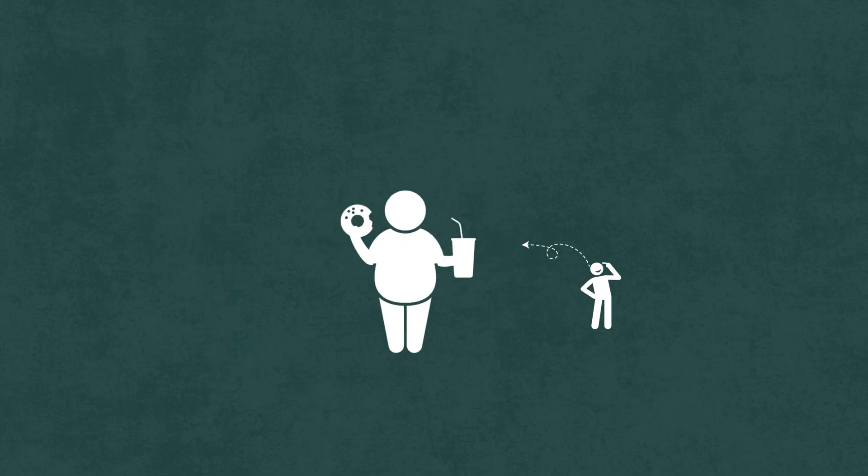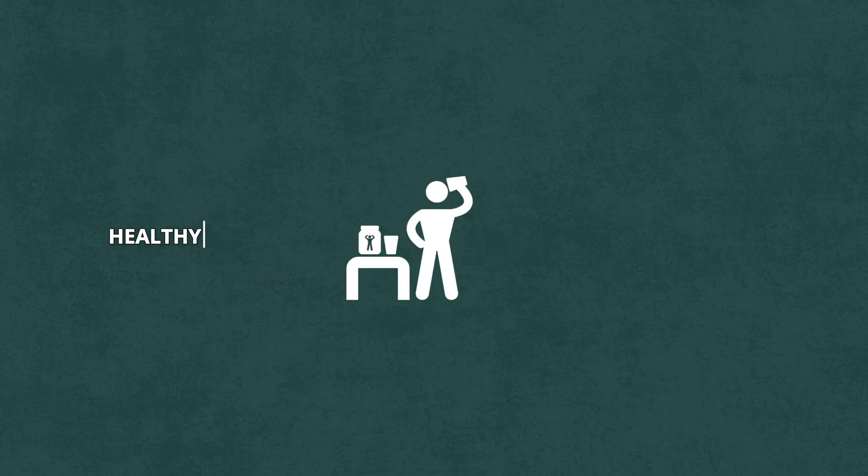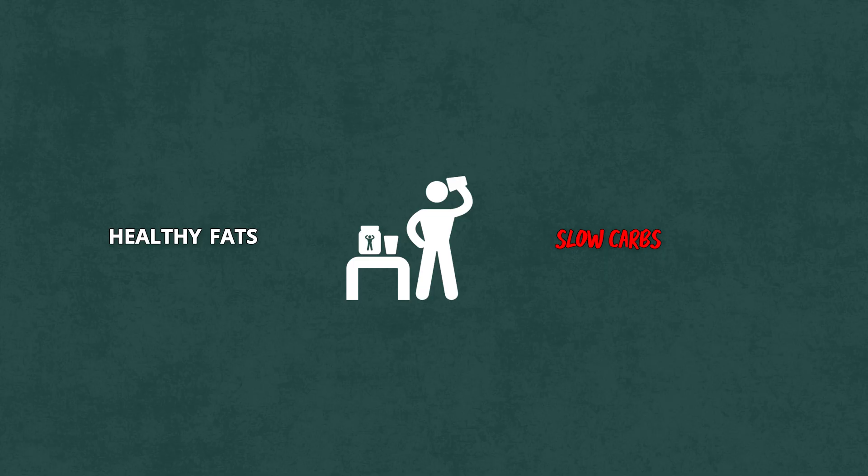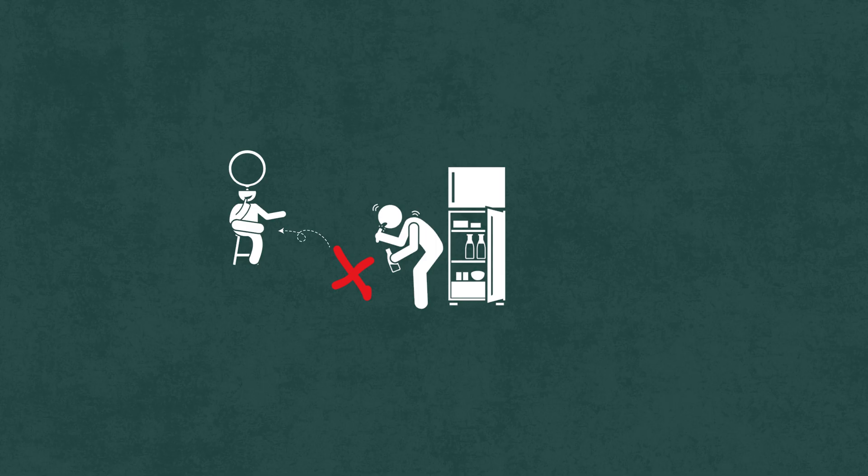If you keep starting with sugar, you'll keep chasing dopamine highs and crashing into brain fog. But if you fuel your brain with protein, healthy fats, and slow carbs, you'll notice something wild. You won't need caffeine to feel awake, you won't crave snacks every two hours, and your thoughts will actually feel clear.